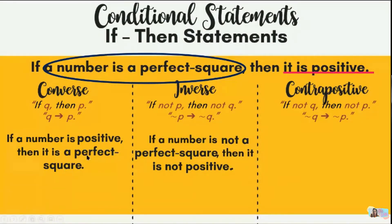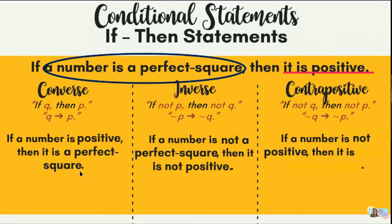For the contrapositive of example three, take the converse and negate both parts. Student Sario answers: 'If a number is not positive, then it is not a perfect square.' Correct — or equivalently, 'If a number is negative, then it is not a perfect square.' Both are acceptable. The contrapositive combines interchanging and negation.